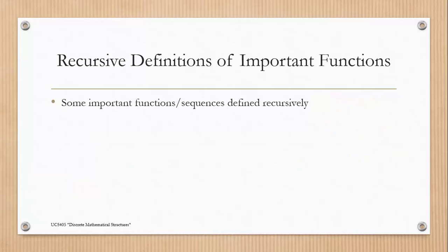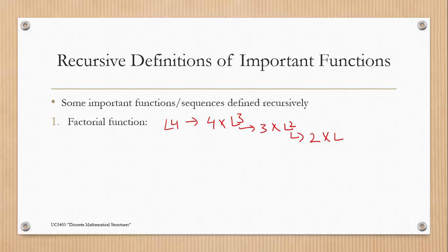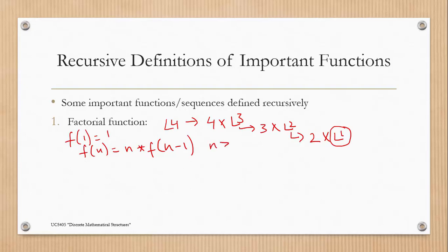Now, some important functions can be defined recursively. The first example is the factorial function. If we want to calculate factorial(4), that equals 4 × factorial(3). Then factorial(3) = 3 × factorial(2), and factorial(2) = 2 × factorial(1). Our base case is factorial(1) = 1. So the recursive definition is: f(1) = 1, and f(n) = n × f(n-1) for n greater than 1.